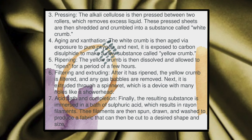The white crumb is then aged via exposure to pure oxygen, and next it is exposed to carbon disulfide to make a new substance called yellow crumb. The yellow crumb is then dissolved and allowed to ripen for a period of a few hours. After it is ripened, the yellow crumb is filtered and any gas bubbles are removed. Next, it is extruded through a spinneret, which is a device with many holes like a showerhead.